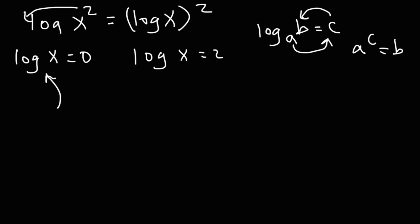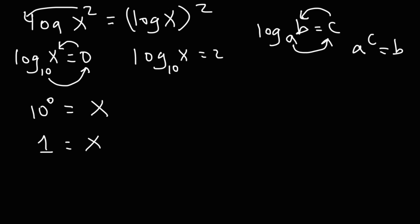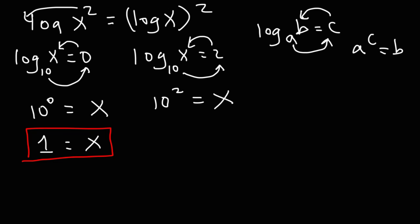We don't have a base written for log, but if you don't see a number, always assume it's 10. So we have base 10 for both expressions. Converting to exponential form: 10 raised to the zero power equals x. Anything raised to the zero power is 1, so our first answer is x equals 1. For the second equation, 10 raised to the second power equals x — 10 times 10 is 100 — so our second answer is x equals 100.